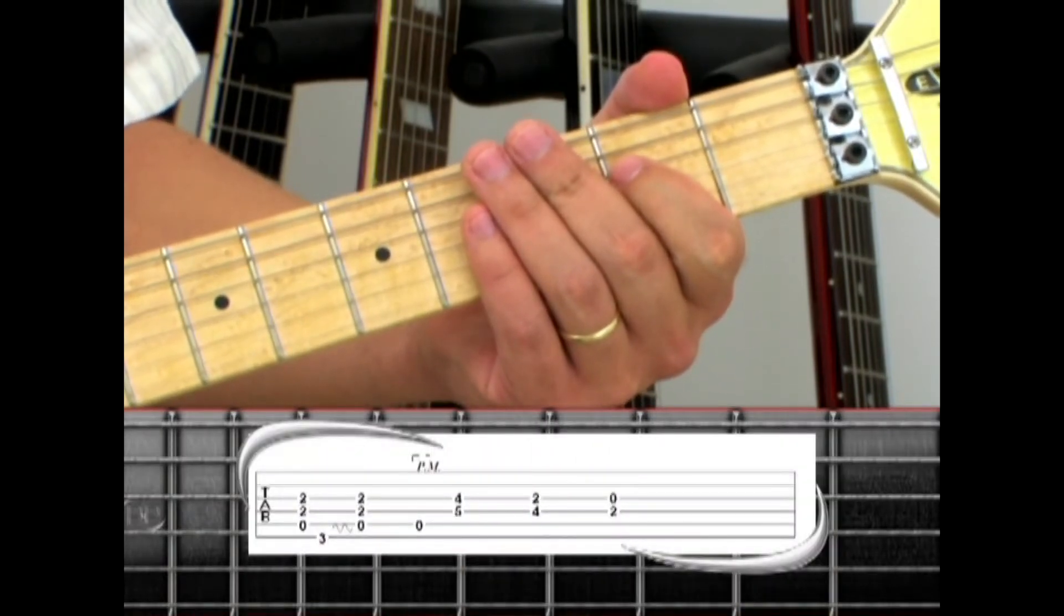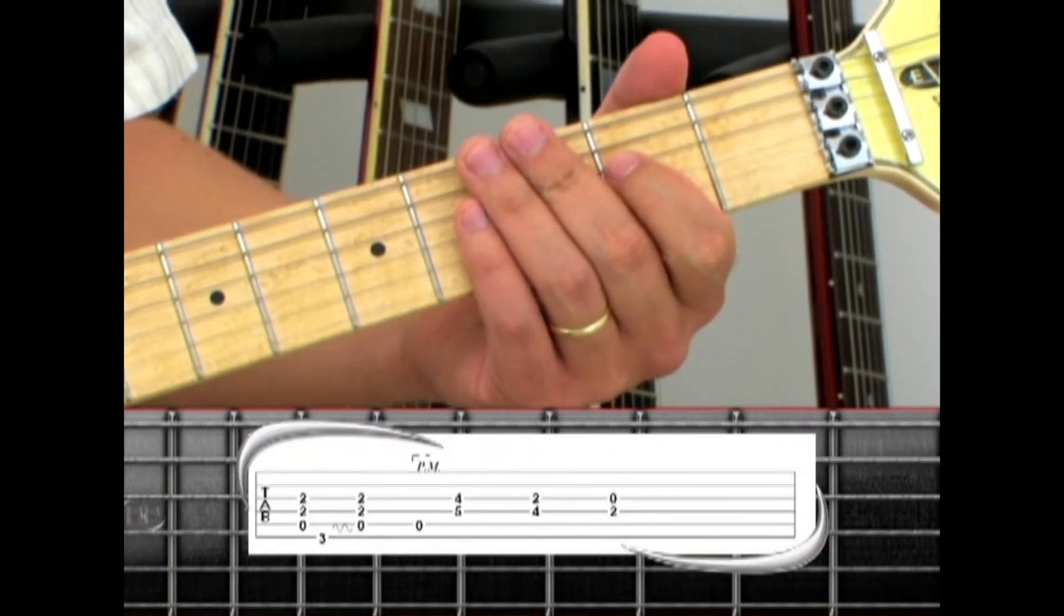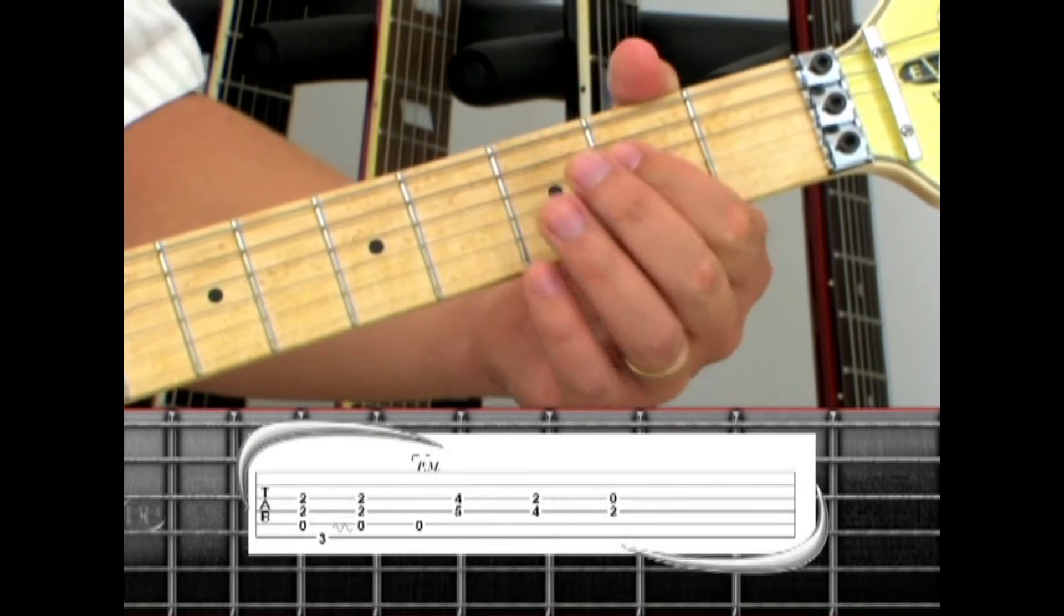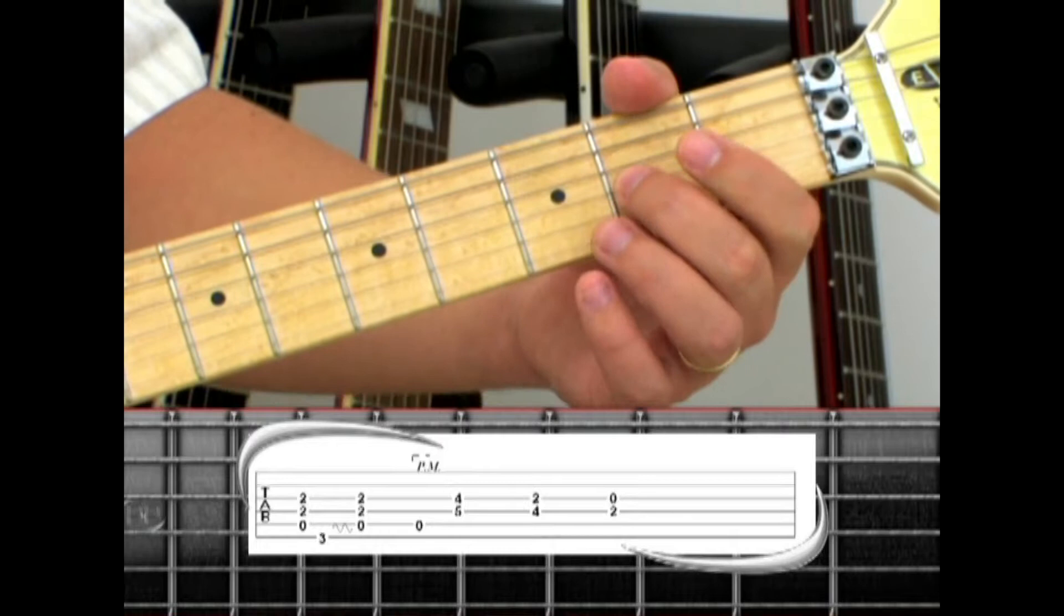In phrase 2, we have the verse starting off on an A5 power chord: 5th string open, 4th string 2nd fret, and 3rd string 2nd fret.